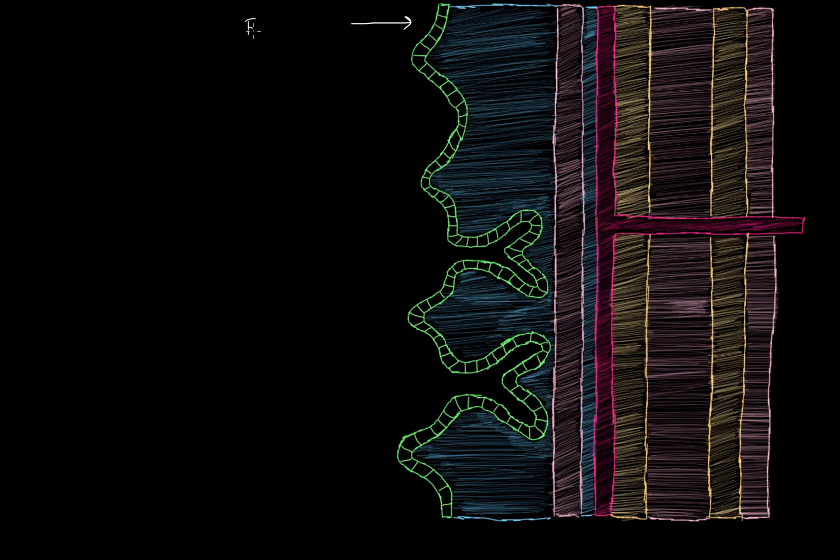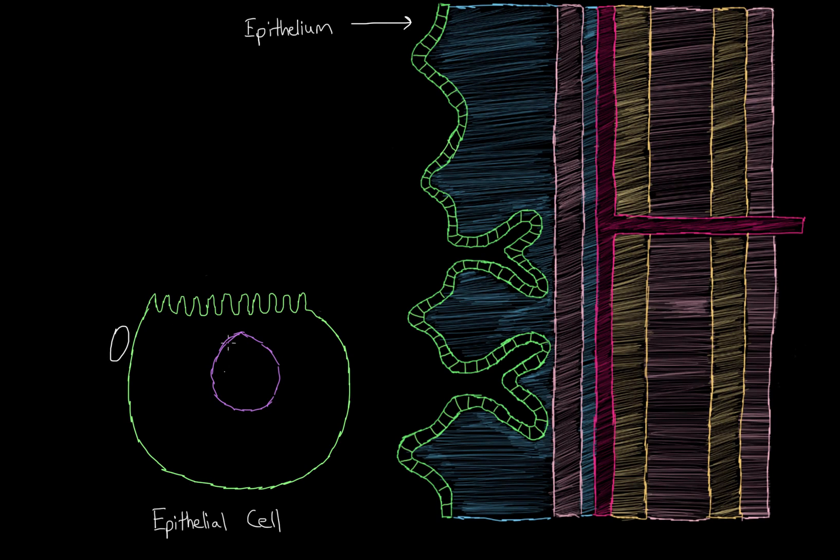We're going to focus on this green layer here known as the epithelium, and we'll focus on one of those epithelial cells. The bacteria will look something like this, and it'll actually try to physically associate with the epithelial cell using these structures known as pili, which is just plural for pilus.